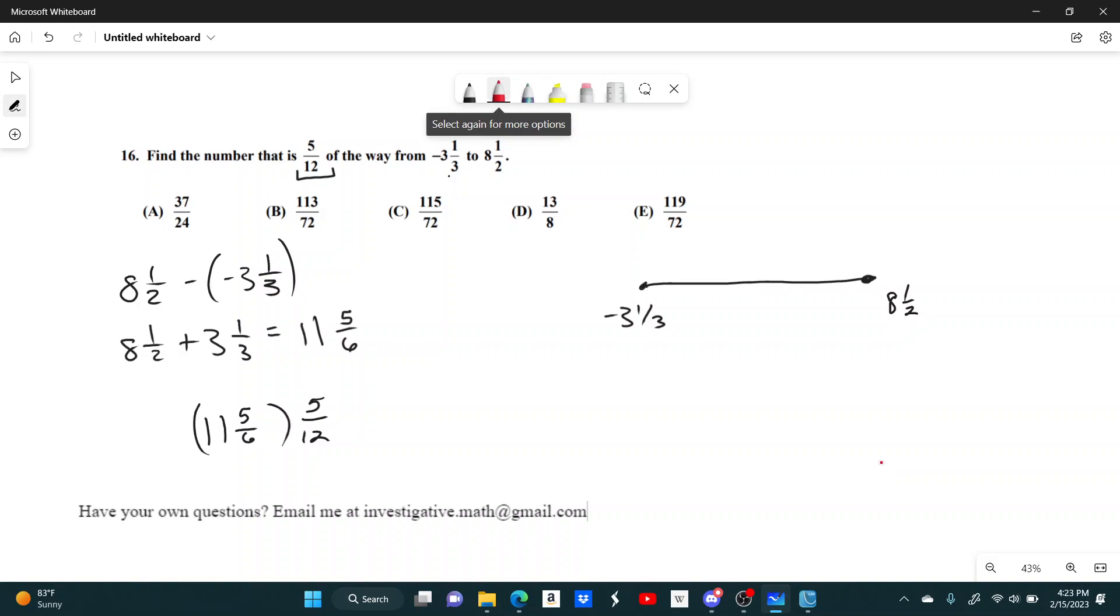Then the number 5 twelfths away, that's half, so 5 twelfths will be like around here. So this will be where the number we're looking for is.